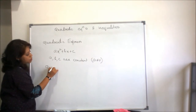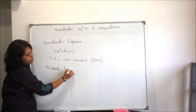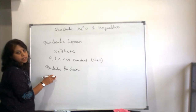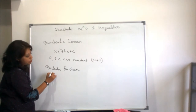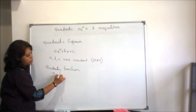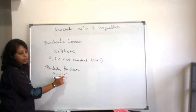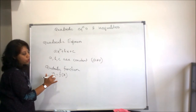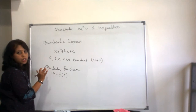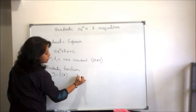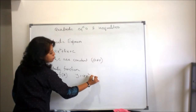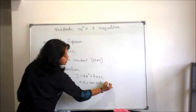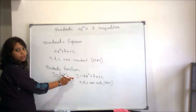Next we are coming to what is a quadratic function. When there are two variables and one variable can be represented by the other — that means x is the independent variable and y can be represented in some form of x — that is called a function. When our representation is of the form y = ax² + bx + c, where a, b, c are constants and a is not equal to 0, this is called the quadratic function.